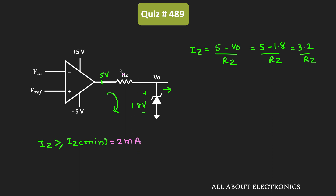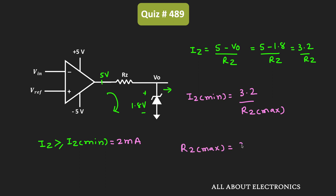We need to select the value of resistor RZ such that the current flowing through the Zener diode is greater than or equal to 2mA. The maximum value of RZ corresponds to the condition where IZ equals IZ minimum. Whenever IZ equals IZ minimum, the value of RZ equals RZ_max. We can write: 3.2 / RZ_max = IZ_min, so RZ_max = 3.2 / IZ_min = 3.2 / 2mA, giving RZ_max equal to 1.6 kΩ.